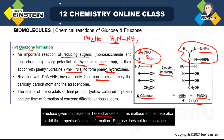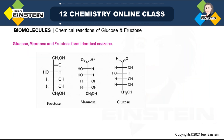For glucose, you have already seen the product. For fructose, the product is fructosazone. Also, mannose is another monosaccharide. The difference among glucose, fructose, and mannose is only in the first two carbons; the rest of the molecule is identical. Mannose and glucose differ only in the position of one OH group.